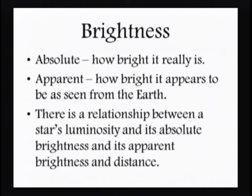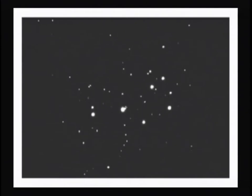You can also talk about brightness, which is related to luminosity. Absolute brightness is how bright the star really is, and apparent brightness is how bright it appears when seen from Earth. Unfortunately, just by looking at stars, you can't tell which ones are closer or further away — you can't tell if a larger-appearing star is actually large or just closer to Earth.